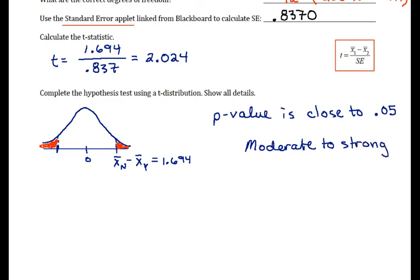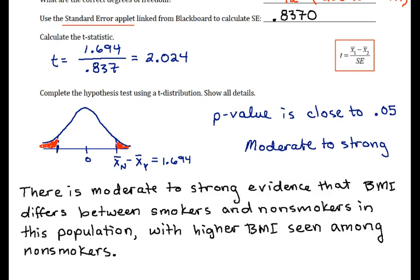So I'll go ahead and write a conclusion in context using non-technical language. So there's moderate to strong evidence that BMI differs between smokers and non-smokers in this population. We're being, again, a little bit vague about what our population is here. And it's worth noting that the higher BMI is seen among non-smokers. Our alternative hypothesis was two-sided, but we can still make a statement about which group seems to have the higher mean.